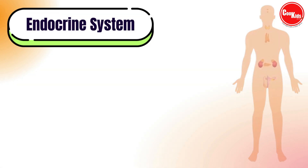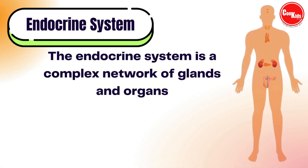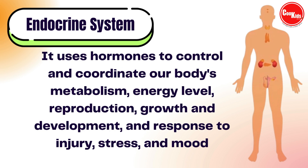The endocrine system is made up of glands that make hormones. Hormones are the body's chemical messengers — they carry information and instructions from one set of cells to another. It controls and coordinates the body's metabolism, energy level, reproduction, growth and development, and responds to injury, stress, and mood. The endocrine system regulates all biological processes in the body from conception through childhood and into old age, including the development of the brain and nervous system, the growth and function of the reproductive system, as well as metabolism and sugar levels.